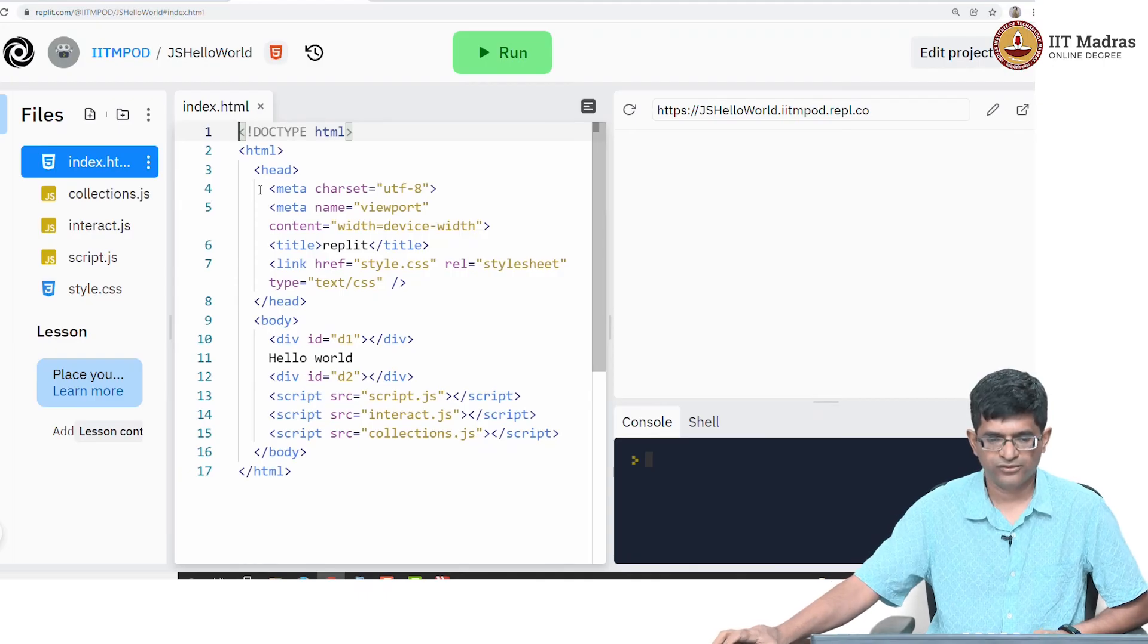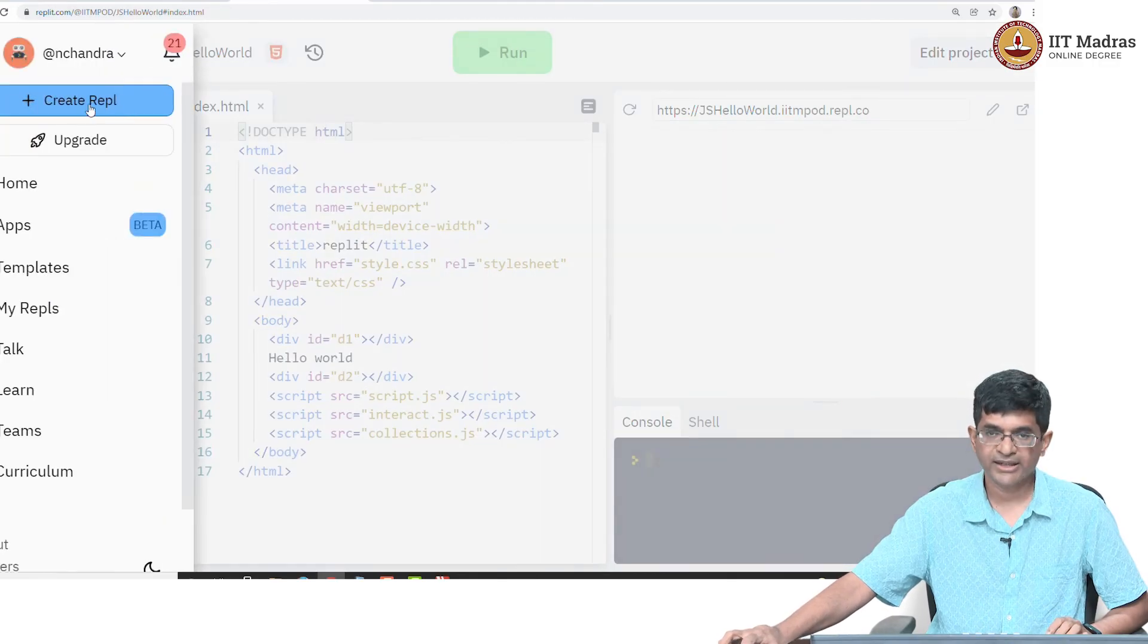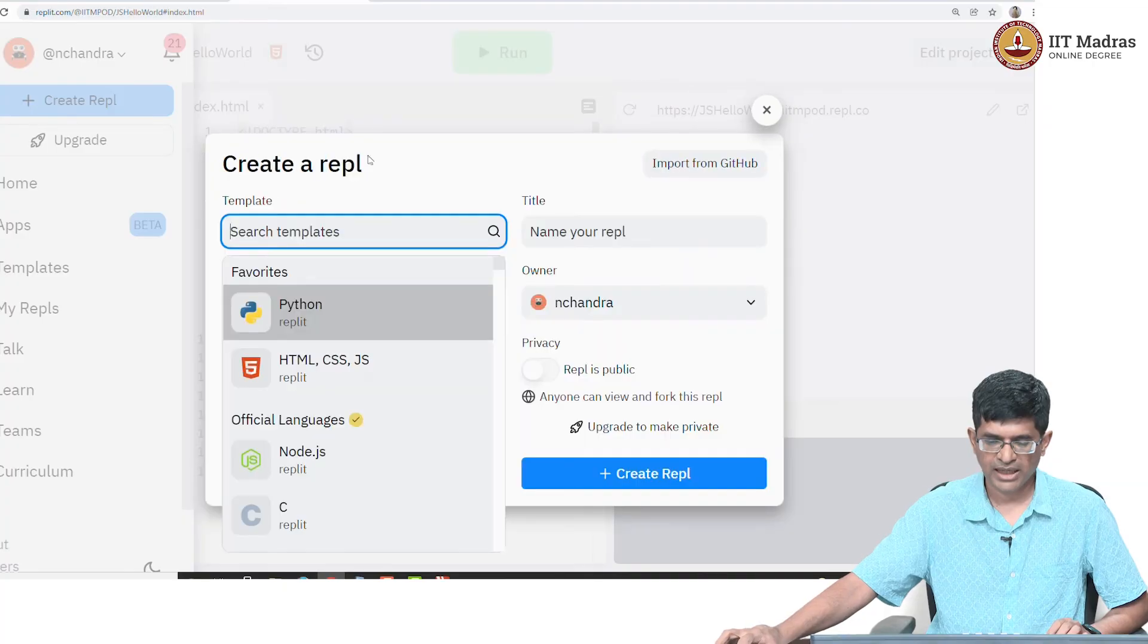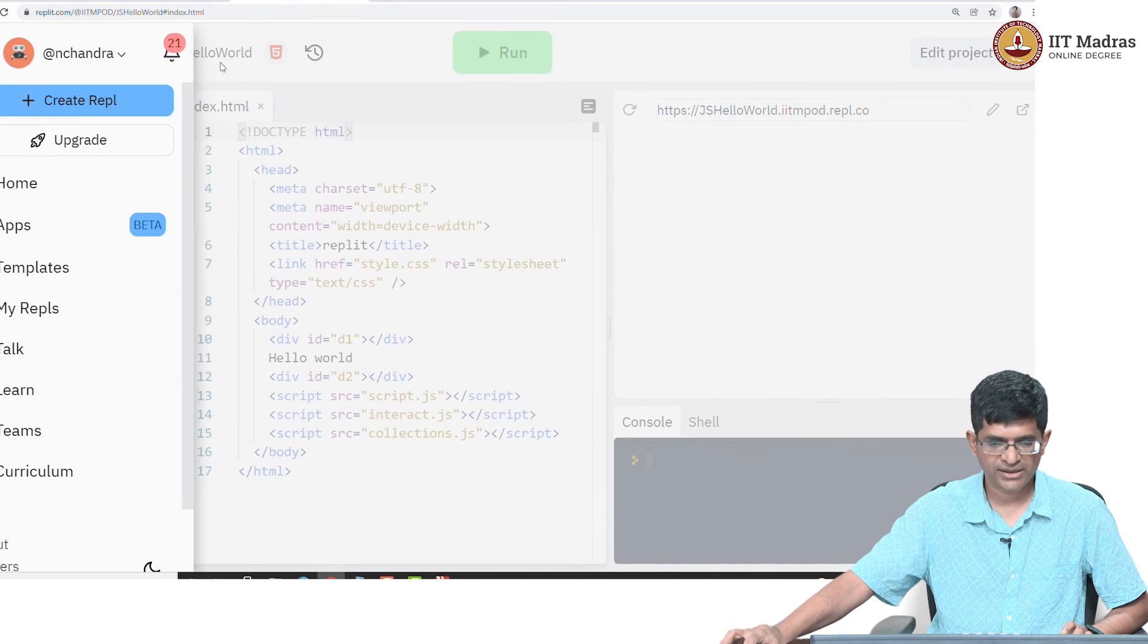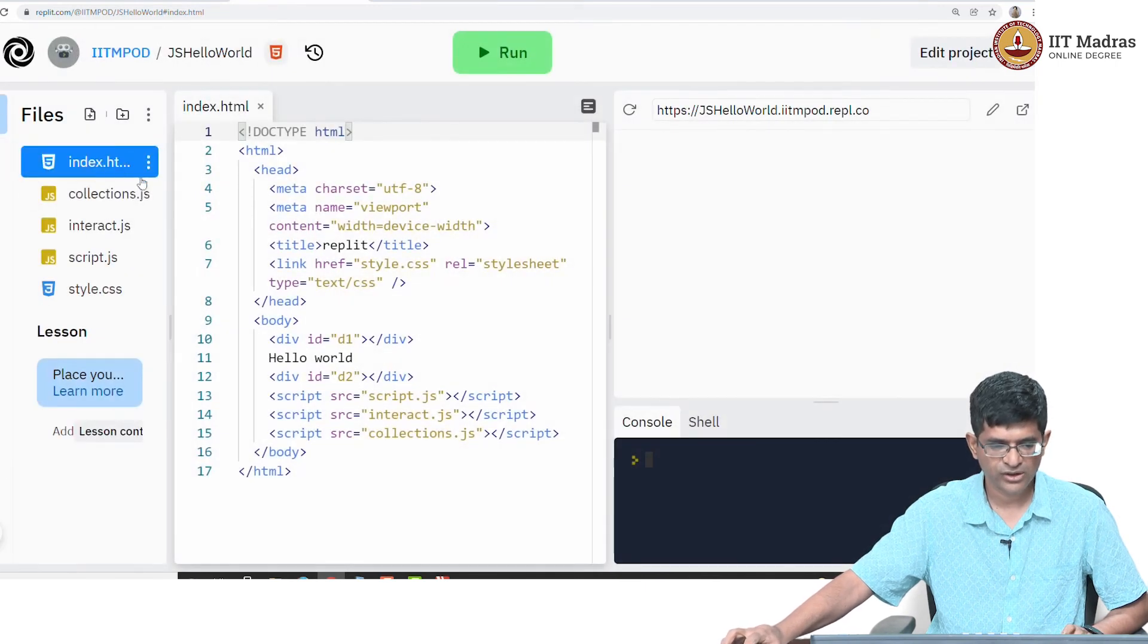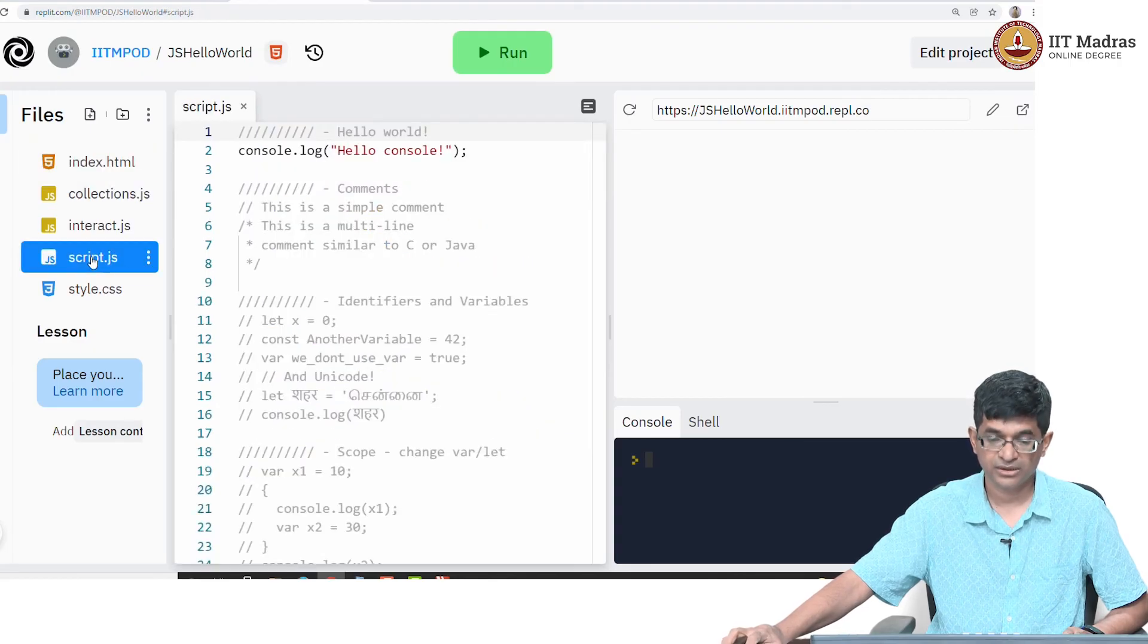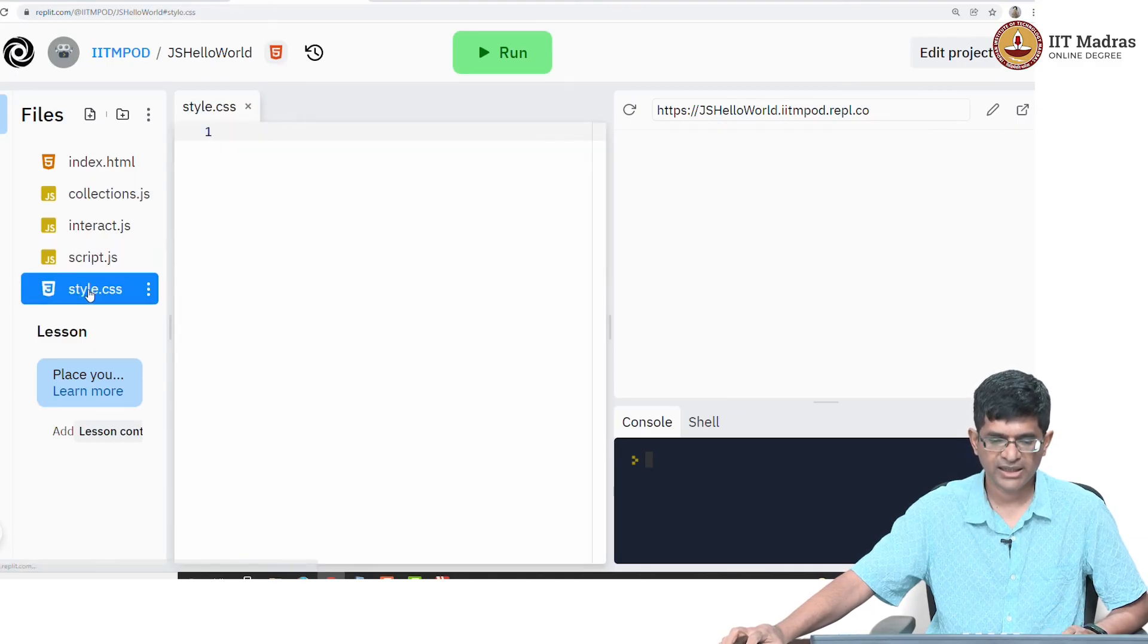This is an example of a basic project that I have created in REPLIT. In fact if you just go to REPLIT and you say create REPL and you choose HTML CSS JavaScript and you just give it any name that you want, by default it will create something that looks like this which basically has this set of files. It has an index dot HTML, it has a script dot JS. Over here I have added a lot of material, the script dot JS by default it will be empty and there will be a style dot CSS which once again in this case is just empty.